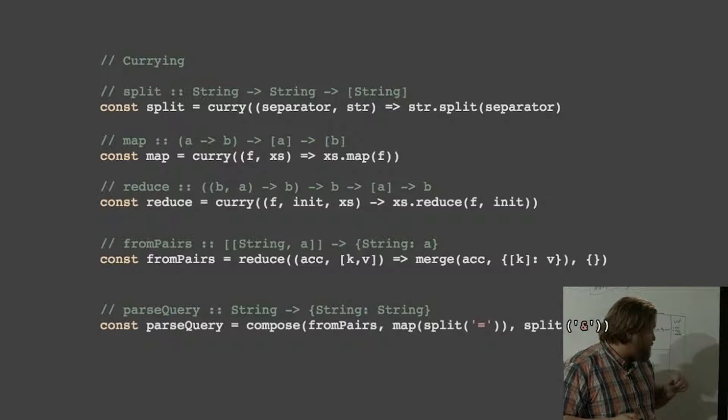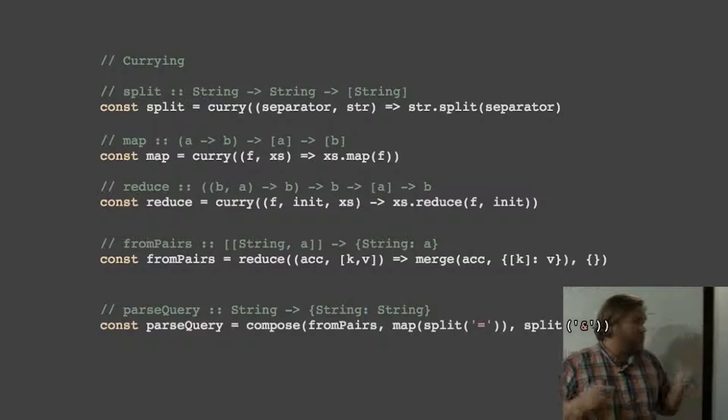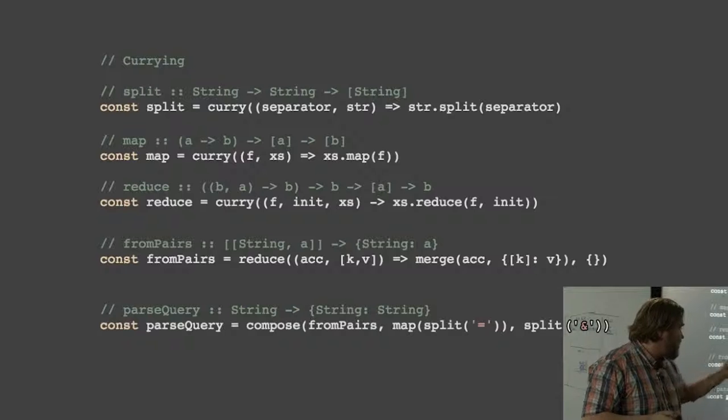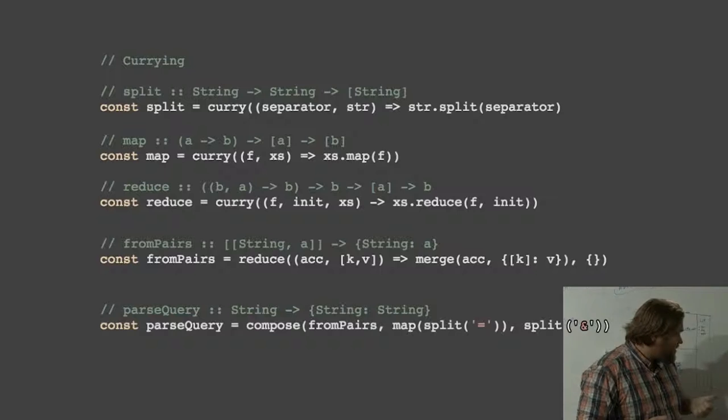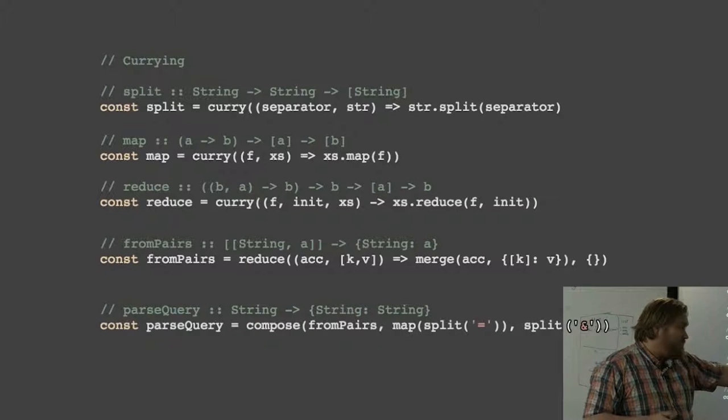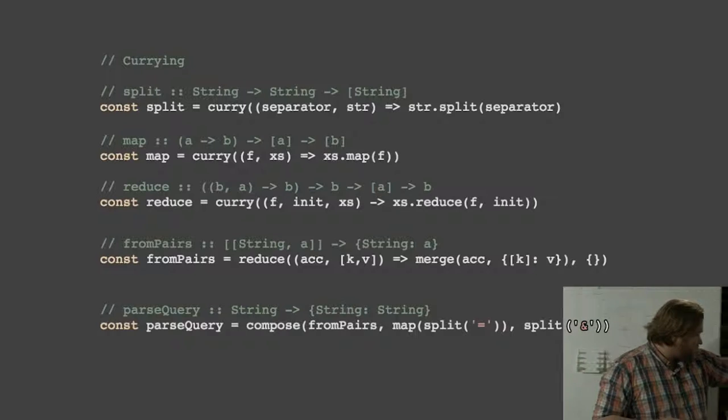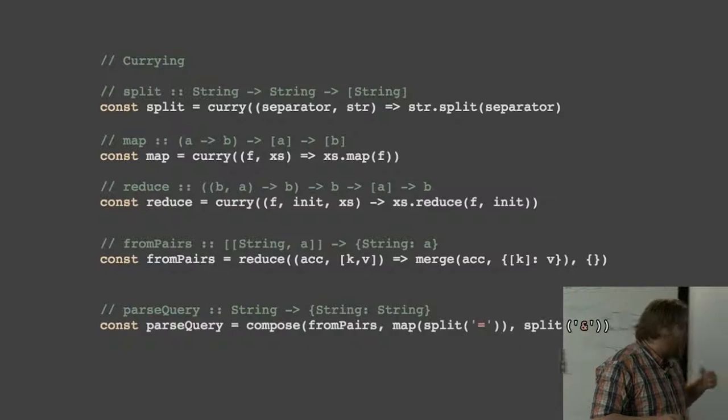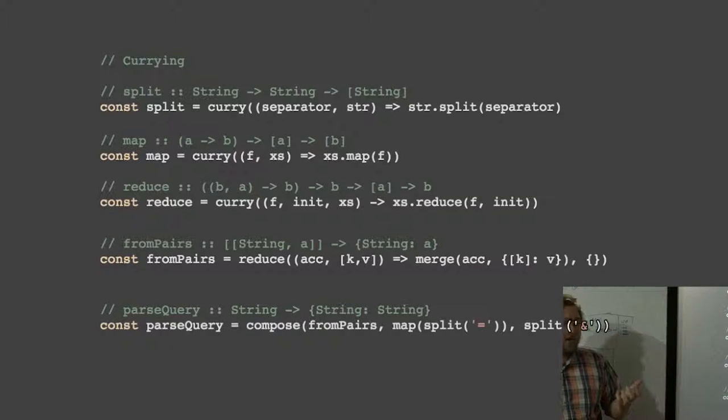And of course our parseQuery function we can rewrite again. Much simpler now. Because we don't have to extract and create all these specific functions, we can just partially apply existing functions. We partially apply split to create the first function that splits by the ampersand. We then partially apply the map function, so we get a function that expects a list. The function we map over is splitting by the equal signs. Finally, we pass that into our old friend fromPairs. So in a very single line, we now get to parse a URL query.